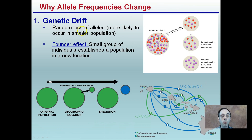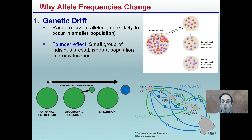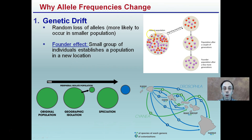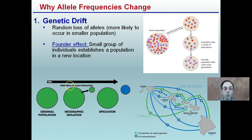Genetic drift and the random loss of alleles are more likely to occur in a smaller population. The founder effect occurs when a small group of individuals establishes a population in a new location. Here we have a parent population and a migrating population that is a very small portion of the total. The purple individuals are initially a very small percentage, but for whatever reason they are selected for, resulting in a greater percentage of them and eventual loss of the red allele — leaving only the purple allele. This occurs more commonly when a group moves from one island to another, becoming an isolated population.